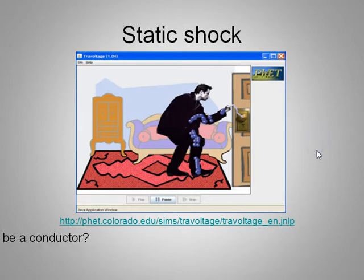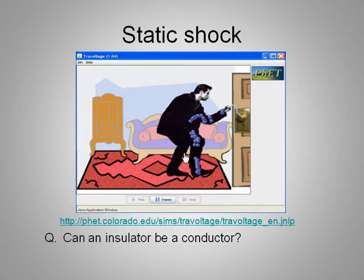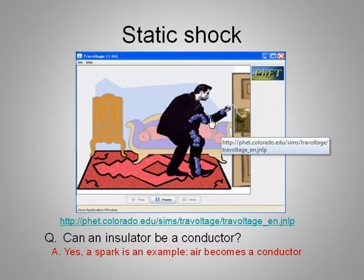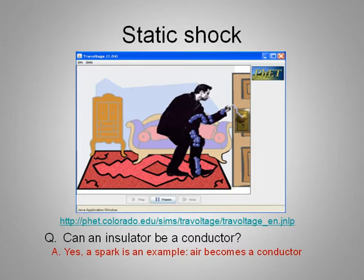There's the applet. And the question: can an insulator be a conductor? It's not much of a trick question, and this applet is a strong clue. The answer is yes — a spark is an example of that. Air, which is normally a very good insulator, can become a conductor if there's enough electrical pressure, that is enough charge built up relative to the doorknob, and the electrons are really encouraged to jump the gap. Insulator, conductor — it's really just a measure of degree. I don't think there's any perfect insulator or conductor. So even air can be a conductor, and any time you see a lightning strike, that's the same thing happening.